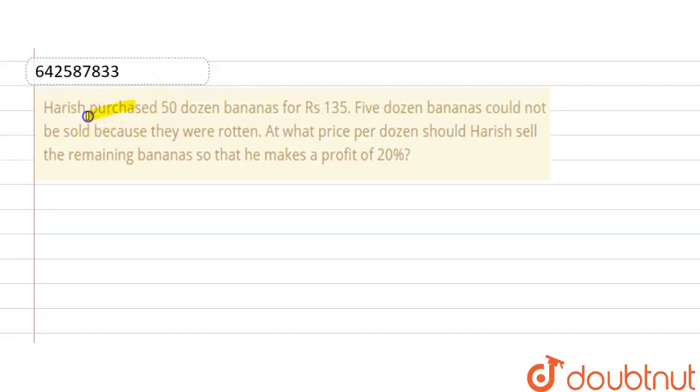Hello guys, the question is: Harish purchased 50 dozen bananas for Rs.135 and 5 dozen bananas could not be sold because they were rotten. At what price per dozen should Harish sell the remaining bananas so that he makes a profit of 20%?